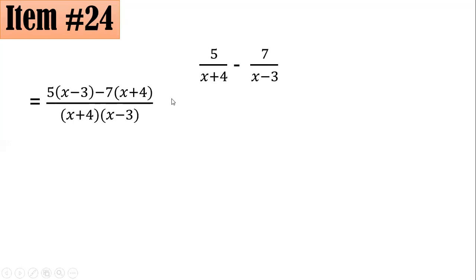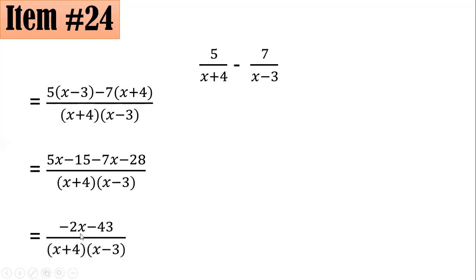By distributing, 5 times (x - 3) is 5x - 15. Negative 7 times (x + 4) will be -7x - 28. 5x - 7x simplifies to -2x. Negative 15 minus 28 simplifies to -43. And the denominators were just copied. And if you answered letter C, you got it right.